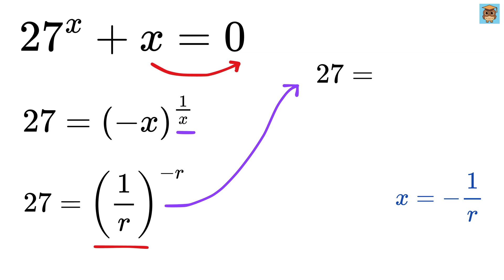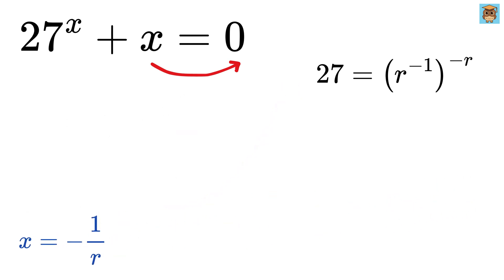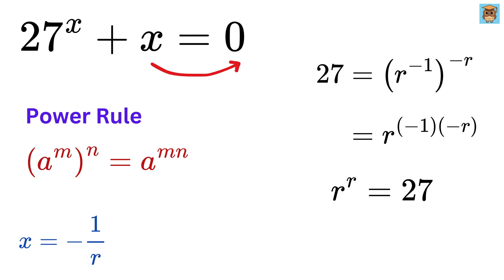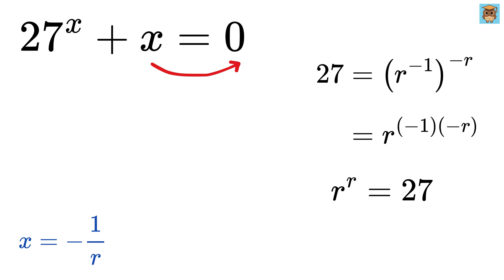We can rewrite 1 over r as r raised to minus 1, and then this is raised to negative r, and this equals 27. Again, using the power rule, we get r raised to minus 1 times minus r, or r raised to r, equals 27. This is simply amazing — now you know where this is going.